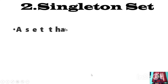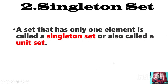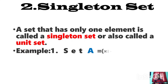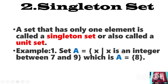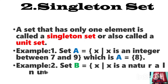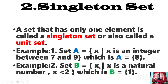Second point: the singleton set. A set that has only one element is called a singleton set, also called a unit set. For example, the set A = {X : X is an integer between 7 and 9}. The only integer between 7 and 9 is 8, so it has only one element — this is a singleton set. Another example: set B = {X : X is a natural number and X is less than 2}. The only natural number less than 2 is 1, so set B has only one element. Both sets are singleton sets.